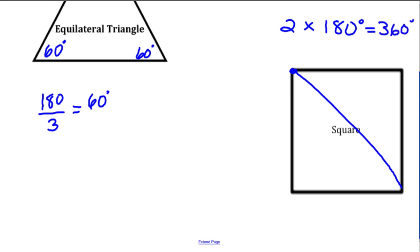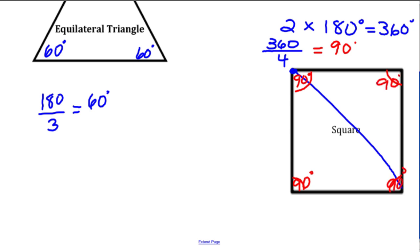The angles inside a square add up to 360 degrees. If we take 360 degrees and divide it by four — because there are four angles — we get 90 degrees. Each interior angle of a square is 90 degrees, and the interior angles add up to 360 degrees. That is true for any four-sided polygon.